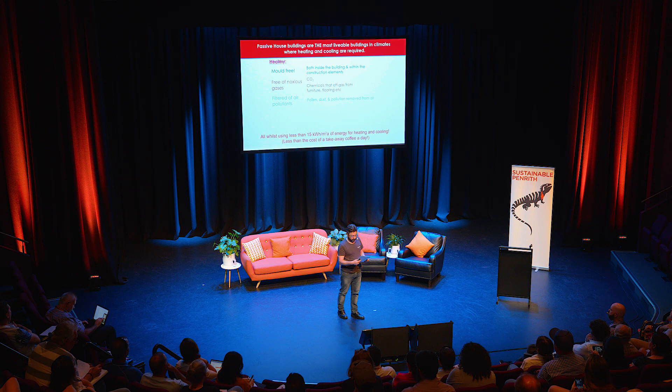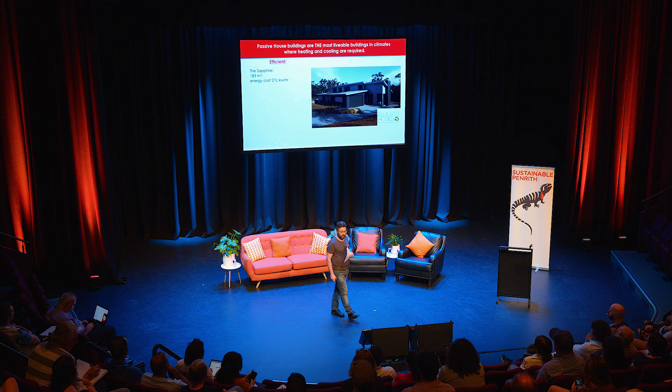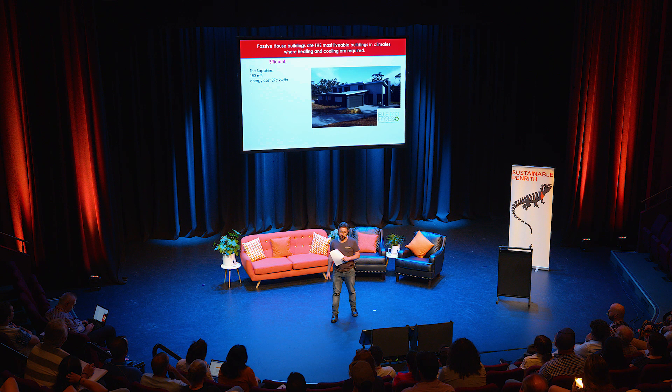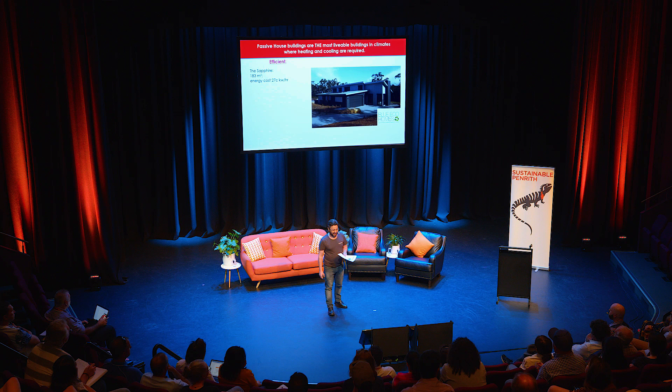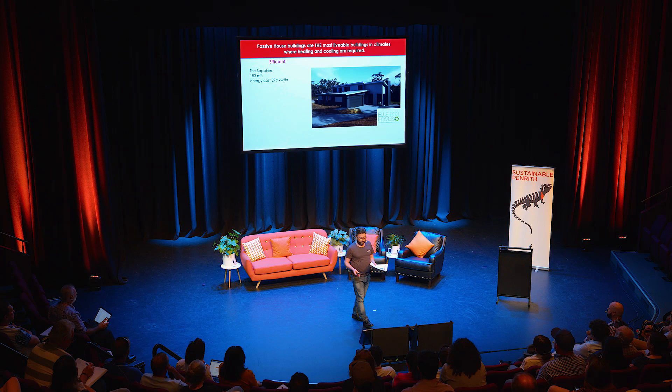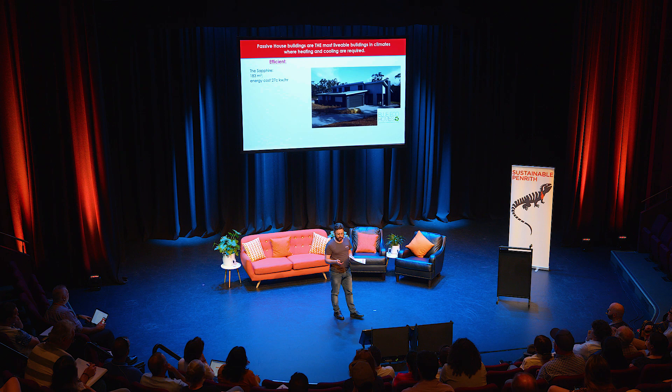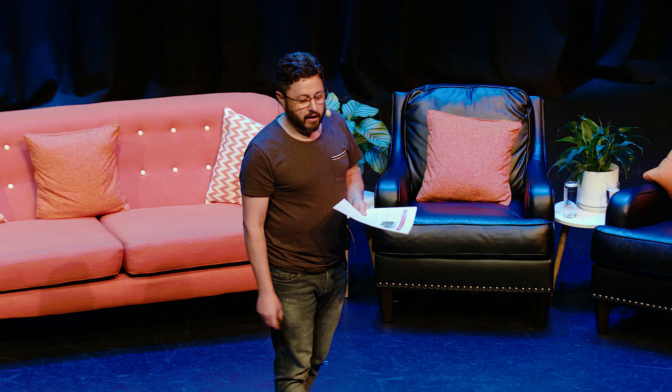Let's look at that efficiency in a bit more detail. This is the Sapphire — a certified passive house built by Blue Eco Homes, completed last year at Hawkesbury. It's open for tours and Blue Eco Homes are here in the audience if you want to talk to them afterwards. It's 183 square metres excluding the garage, and using an energy cost of 27 cents a kilowatt hour, the daily average energy bill for this house will be $1.76.